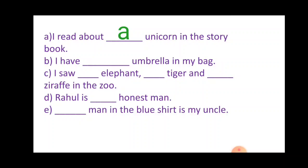Number B: I have dash umbrella in my bag. Before umbrella, an will be used because the pronunciation is like A-U, the vowel U.